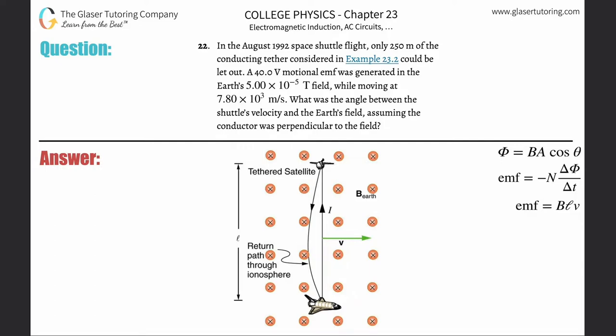Number 22. In the August 1992 space shuttle flight, only 250 meters of the conducting tether considered in example 23.2 could be let out.